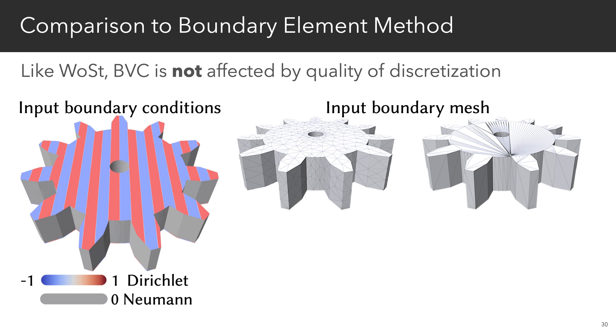Compared to classic approaches like boundary element method, we don't require a high-quality mesh of the volume or the boundary. So in this example, for instance, BEM suffers from large global errors without mesh refinement because of local aliasing of boundary data, and it can completely fail on domains with irregular elements.